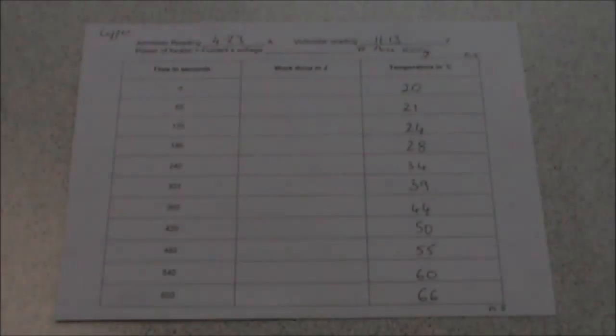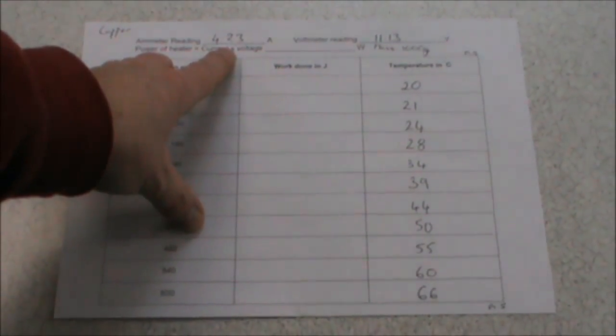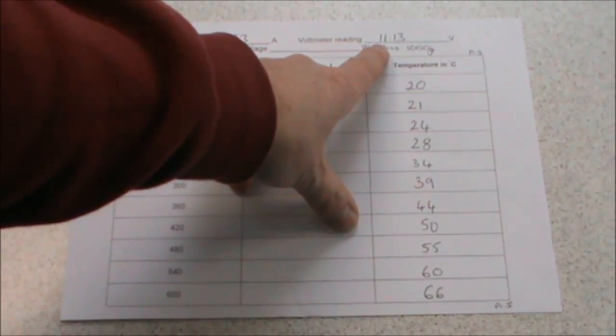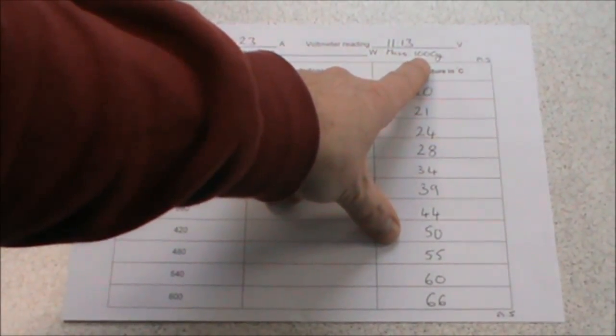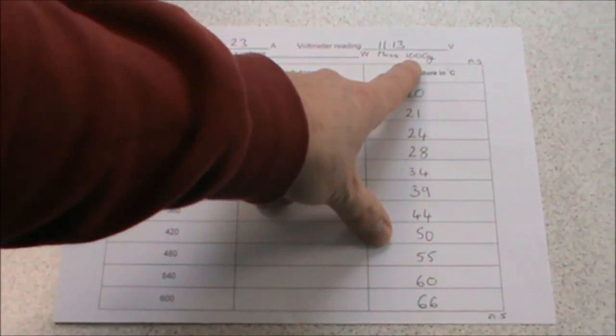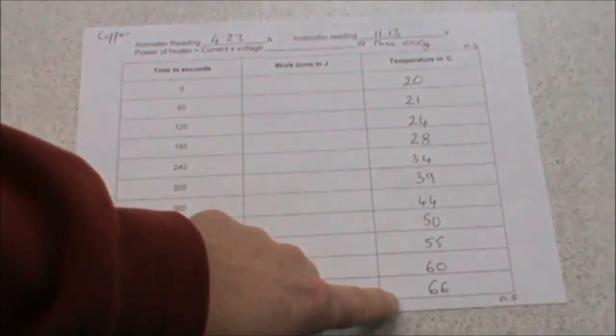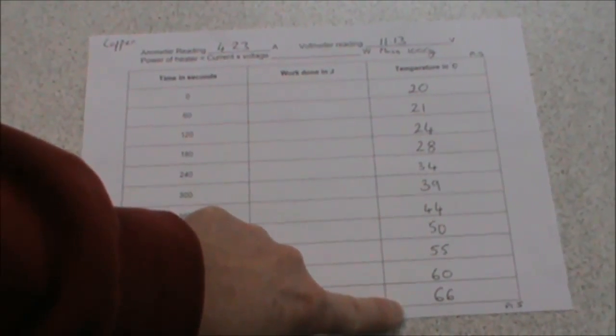You need to repeat the experiment for different types of material. So we've repeated it for steel blocks and aluminium blocks. Here we have a set of results. We had an ammeter reading of 4.23 amps, a voltmeter reading of 11.13 volts, and our copper block had a mass of 1000 grams. You need to complete your results table so that you have all of those temperature readings.